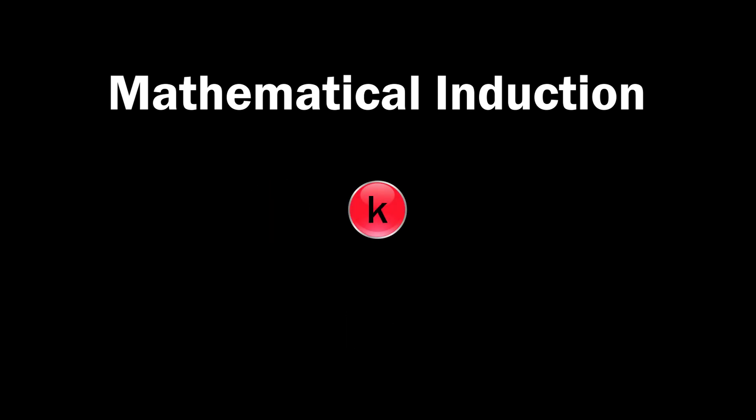Number three, we need an assumption that says the kth domino block or pk falls. We'll simplify this step as k.